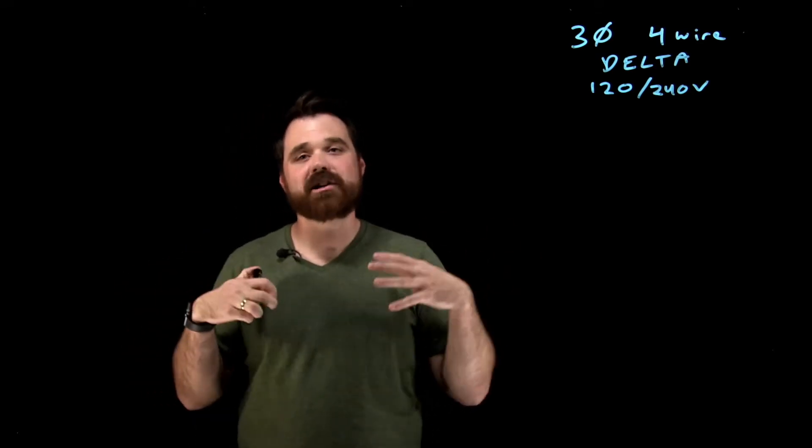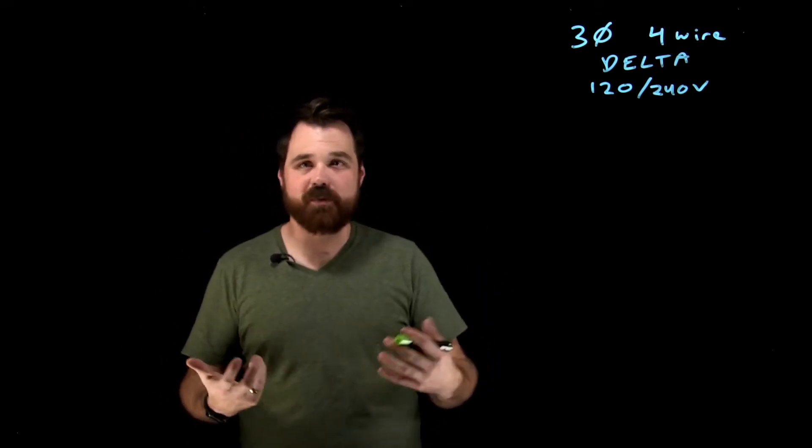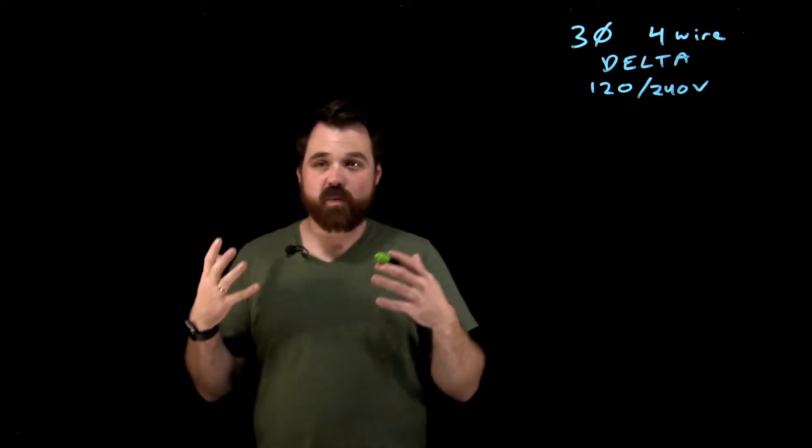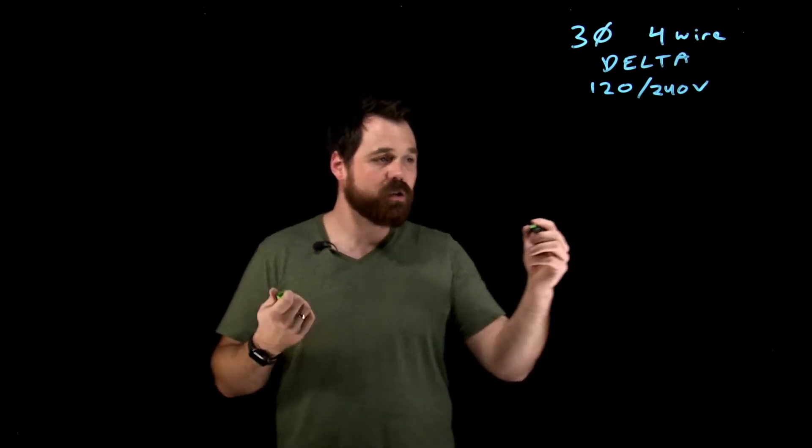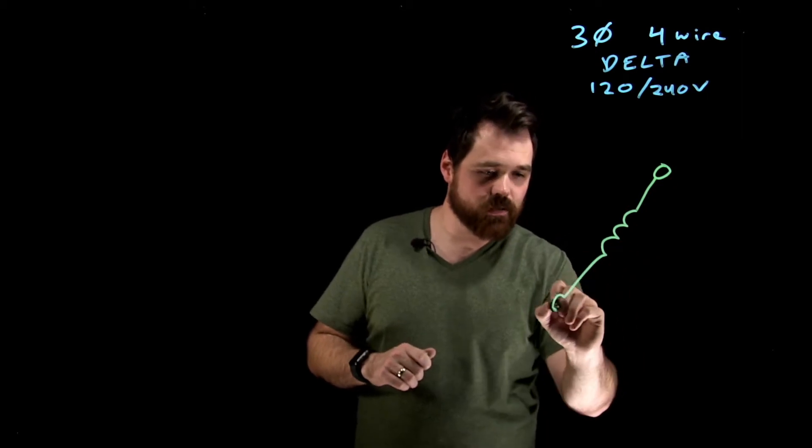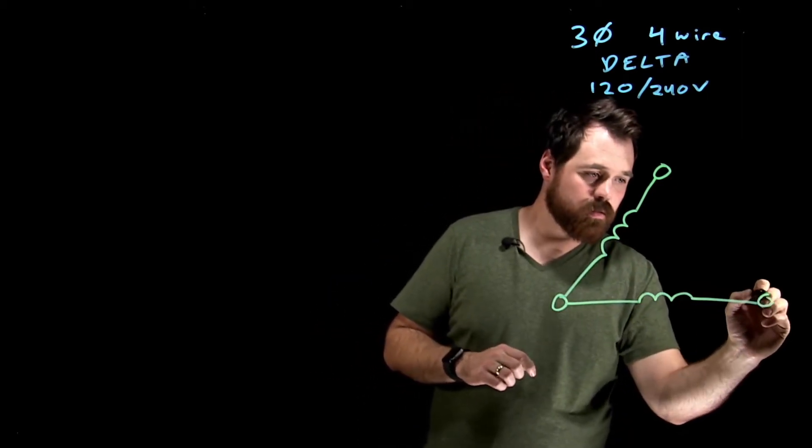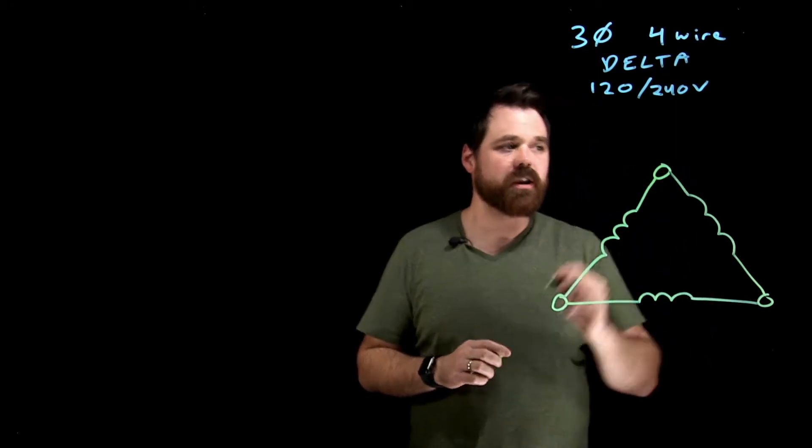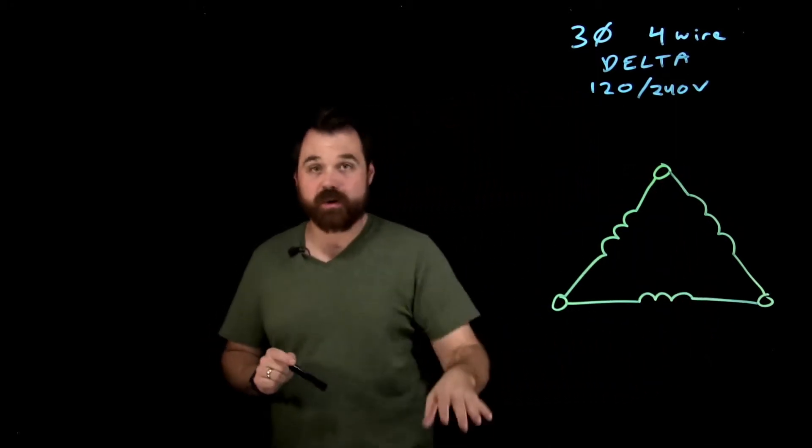The way it works is these are a connection made on the secondary of a transformer to give us this option. And the way that connection works or looks is we'll have our three windings connected up in delta just like they always are.